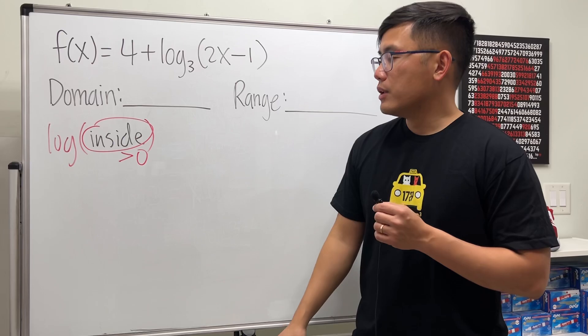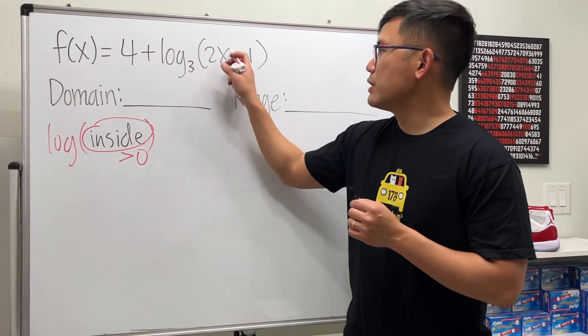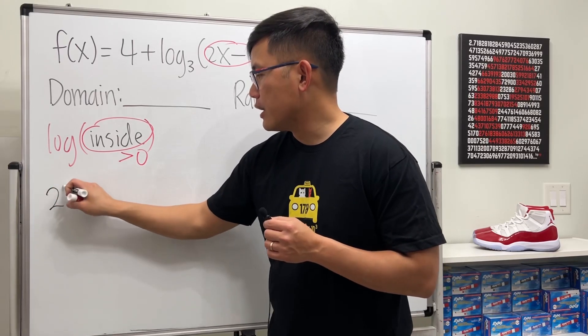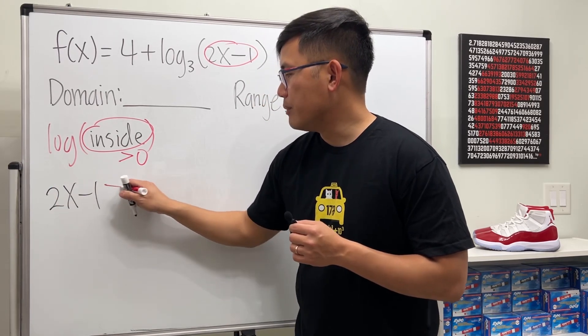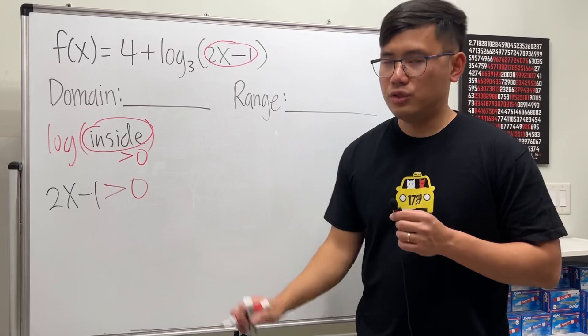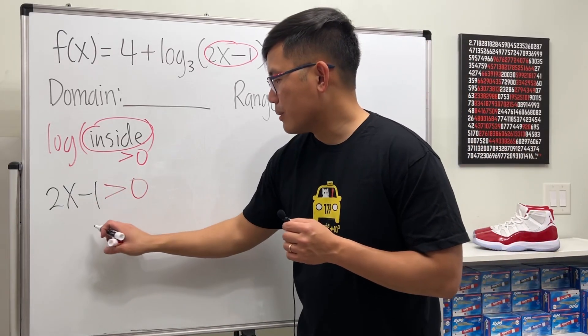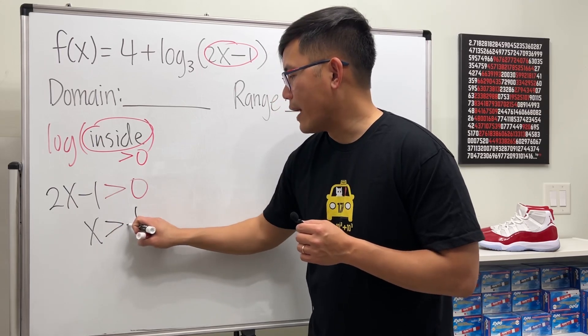Let's go ahead and look at what we have inside, which is 2x - 1. All we care about is 2x - 1, we have to make it greater than 0. Then solve that: add 1 on both sides, divide 2 on both sides, x is greater than 1 over 2.